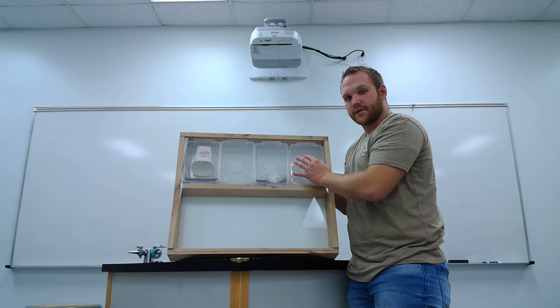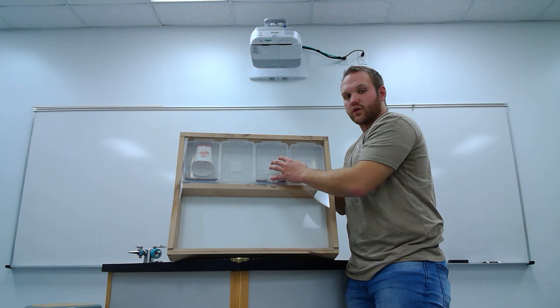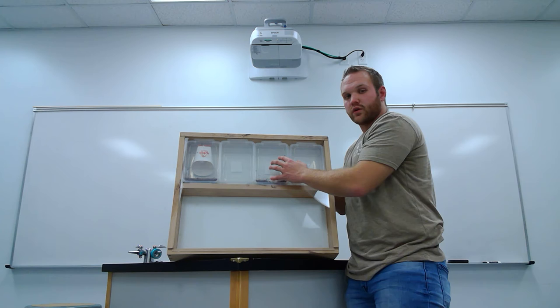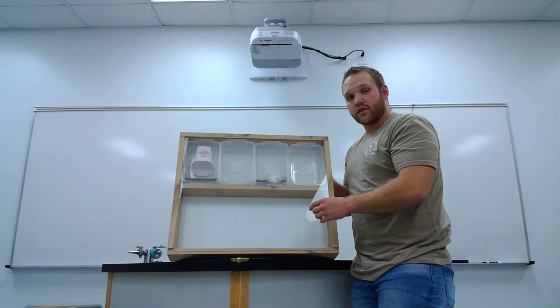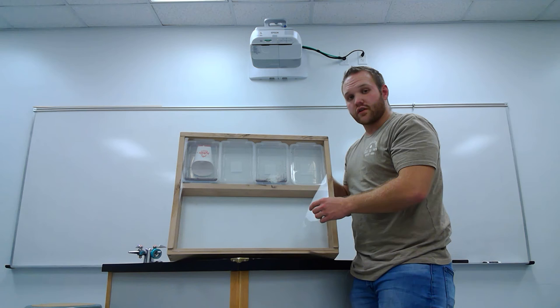And the nice thing about being able to have it down this way is that this area then becomes accessible without the bottom being exposed and you potentially losing some of your beetles. And I've made the background white so that you can easily observe the beetles through the plexiglass and the beetles will be very contrasted against the white background.